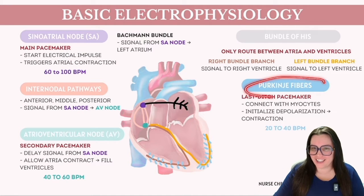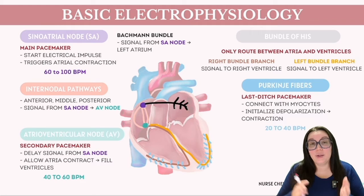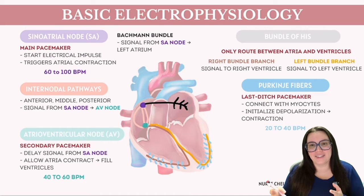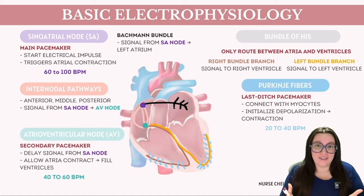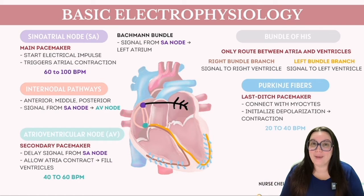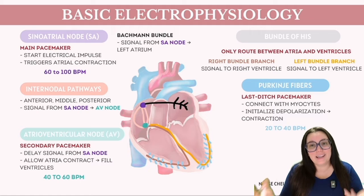The Purkinje fibers project from both the right and left bundle branches and directly interface with the heart's myocytes. Their primary role is to initiate depolarization within muscle cells, triggering contraction of the cardiac muscle. Similar to atrial myocytes, ventricular myocytes receive and further transmit the electrical signal to adjacent cells at a slower pace compared to the rapid transmission seen in the high-speed bundle branches.